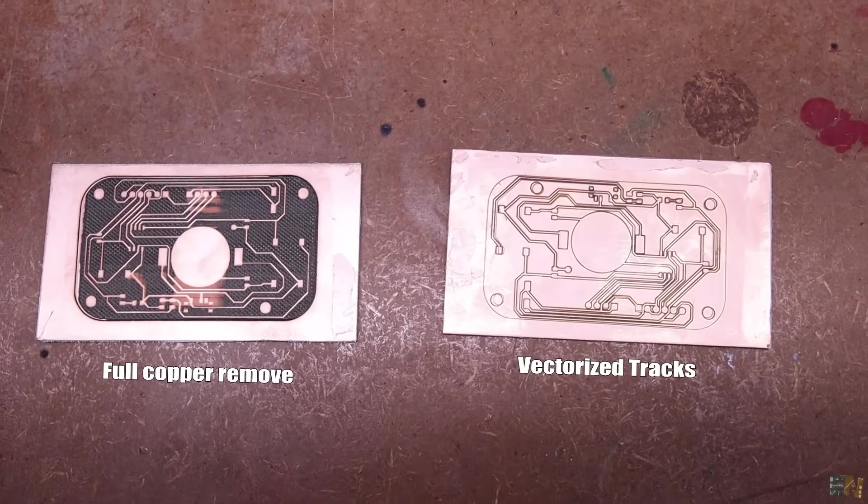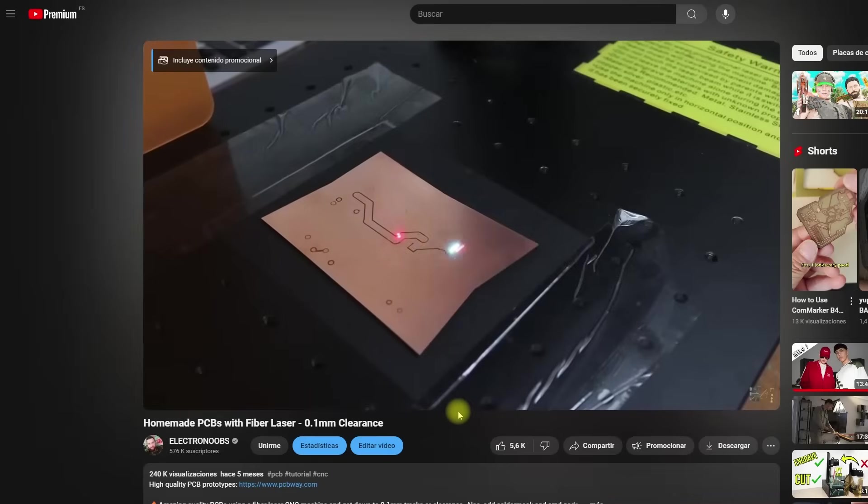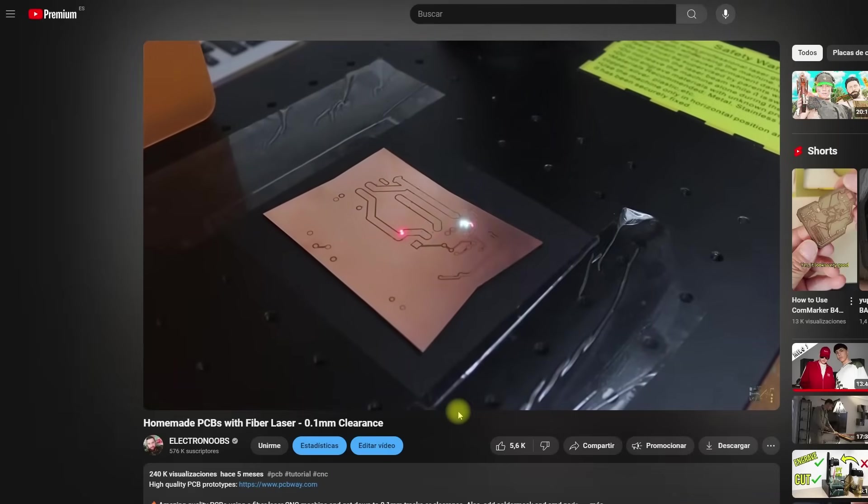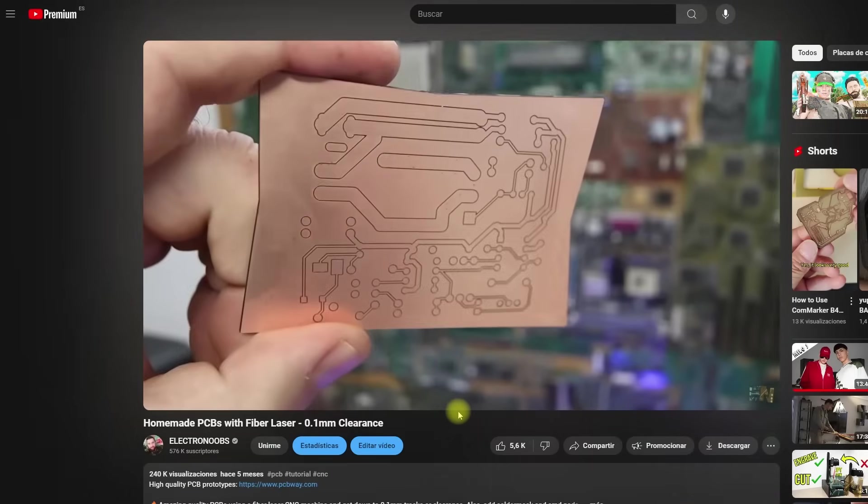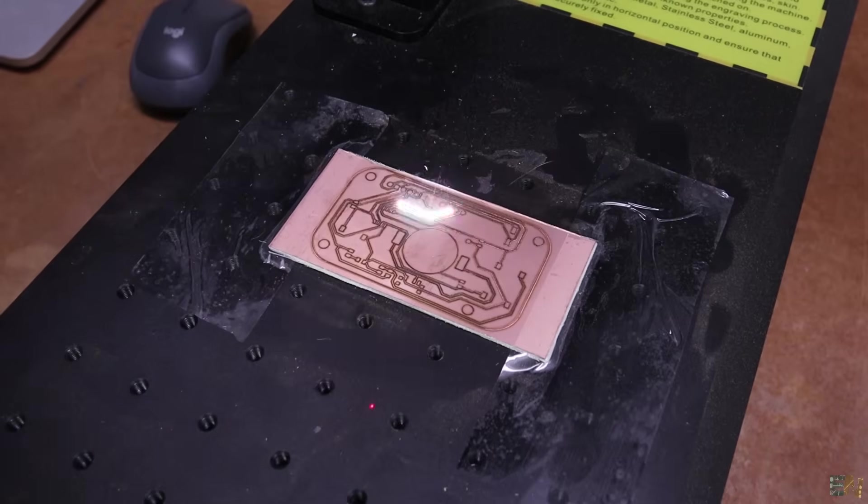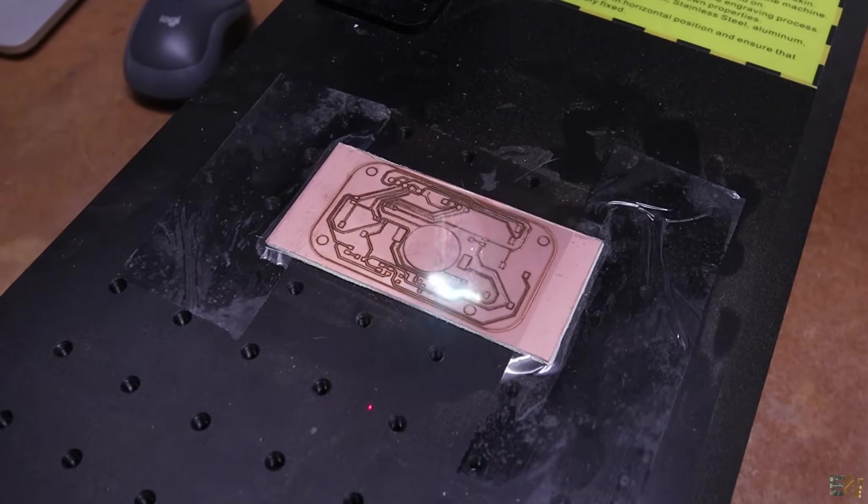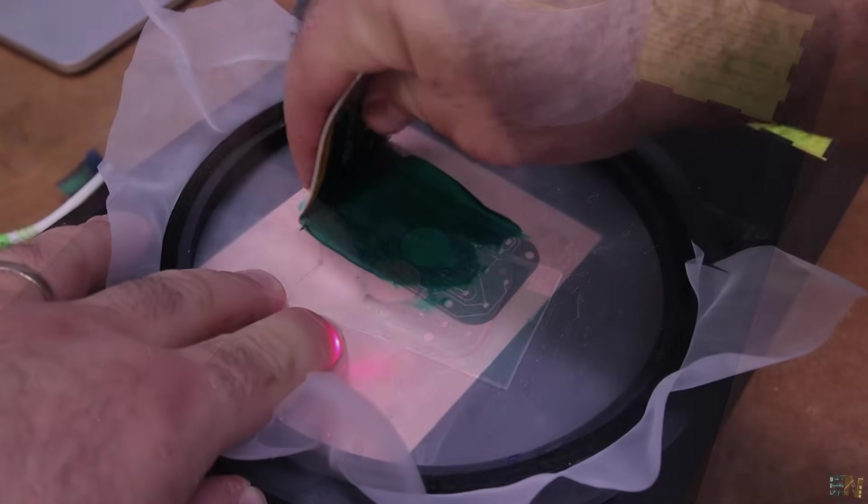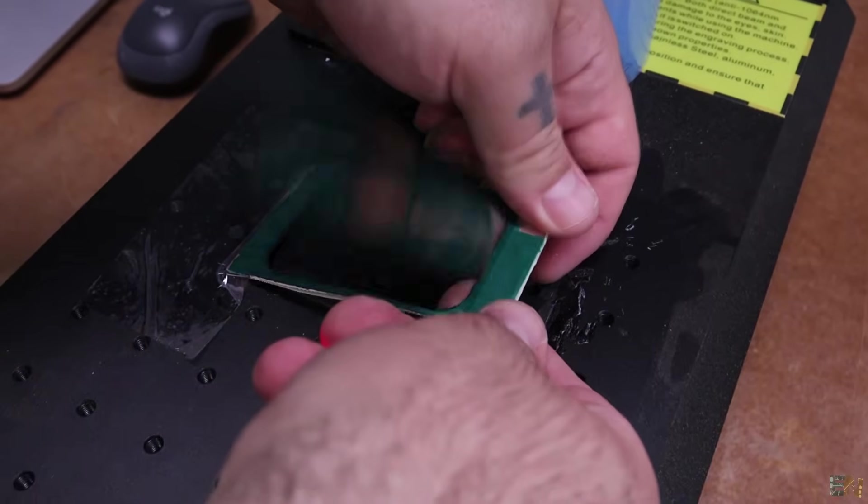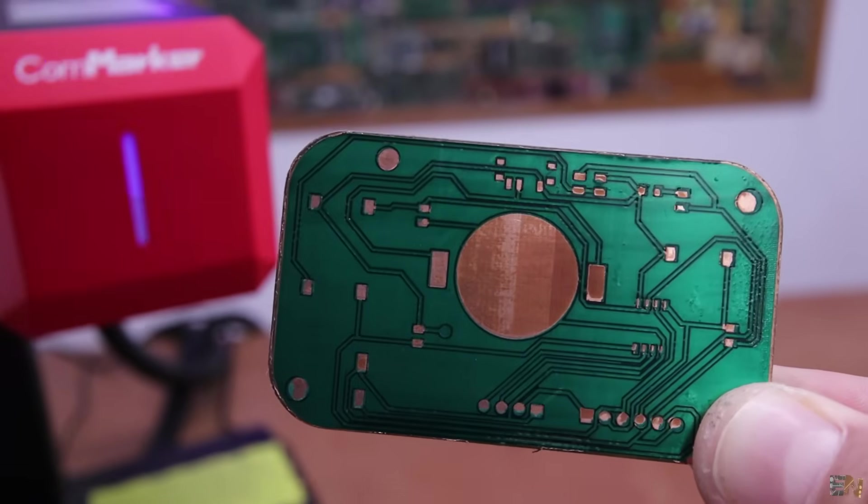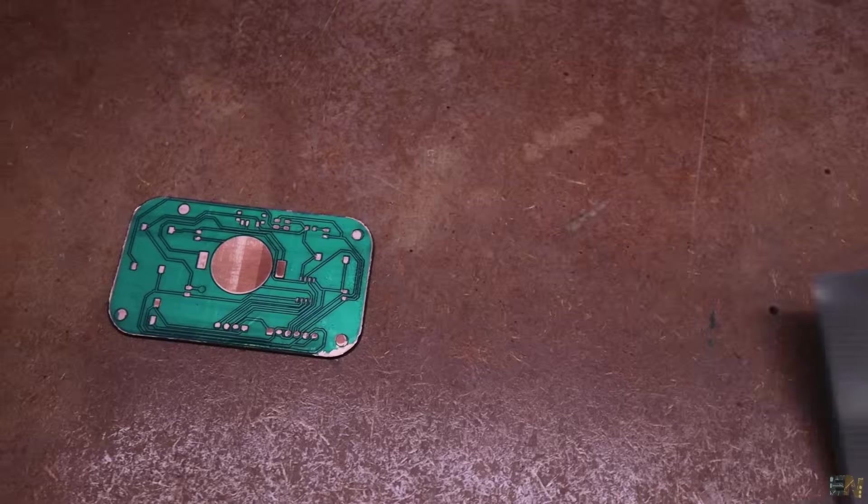And for the PCBs I've made a bunch of tests for removing all the copper or just vectorize the tracks. But for that you can check my previous video where I go step by step on how to engrave on a PCB using this fiber laser. Now let's say that I've made the tracks for this PCB. I apply the solder mask and cure it. I cut the board and now all I need is to solder the components. And to speed the process I need an SMD stencil.